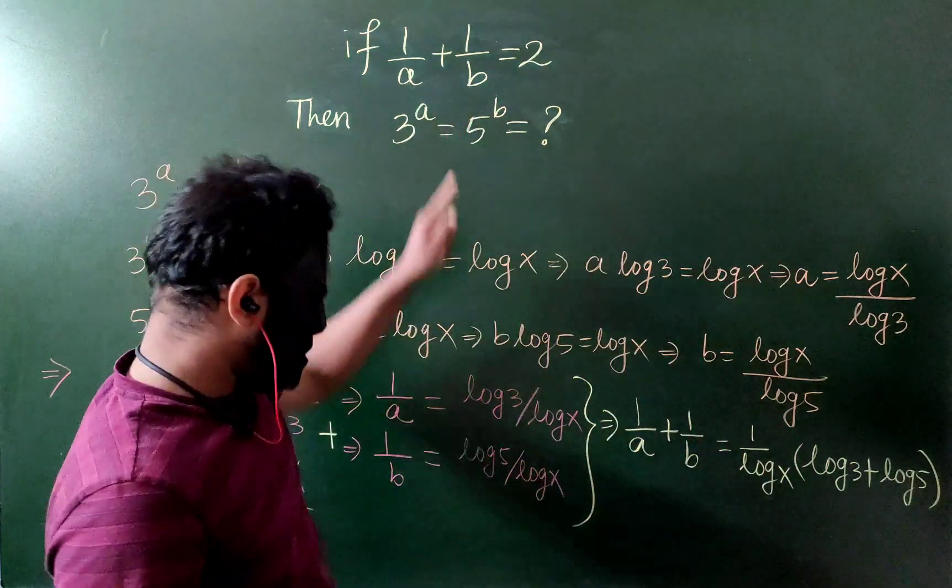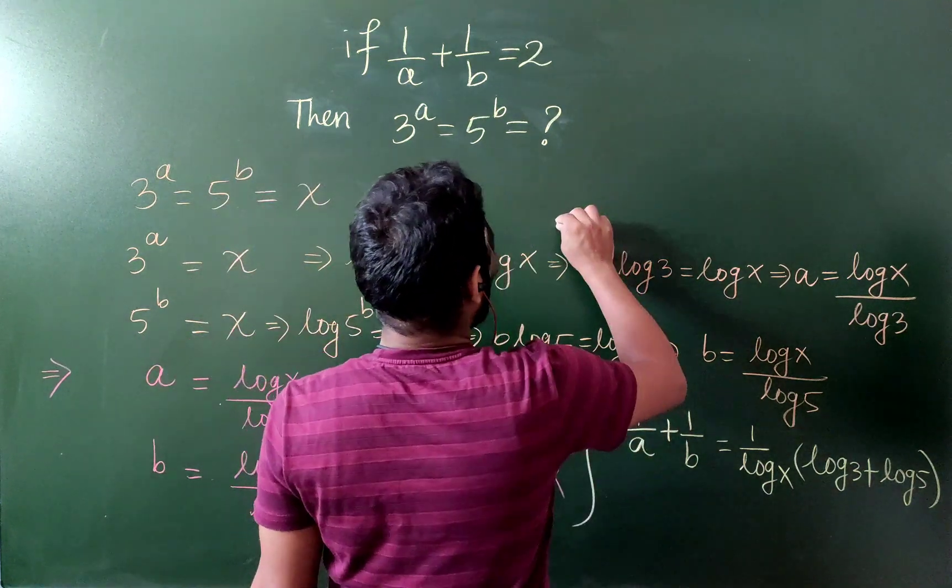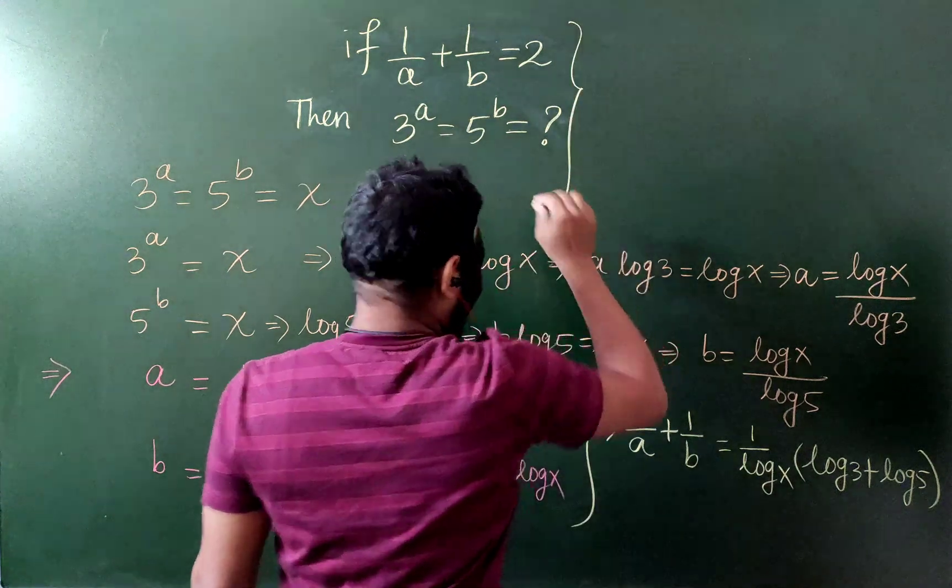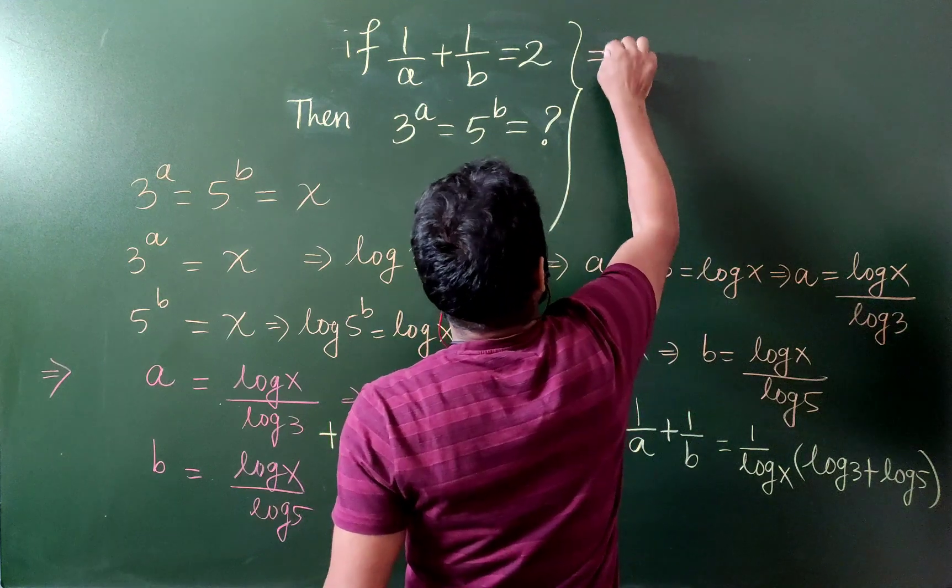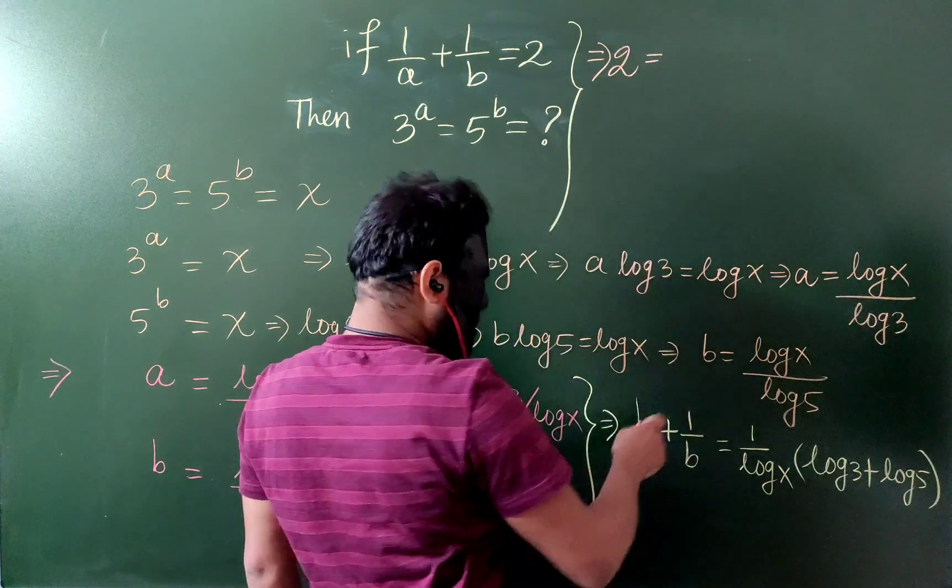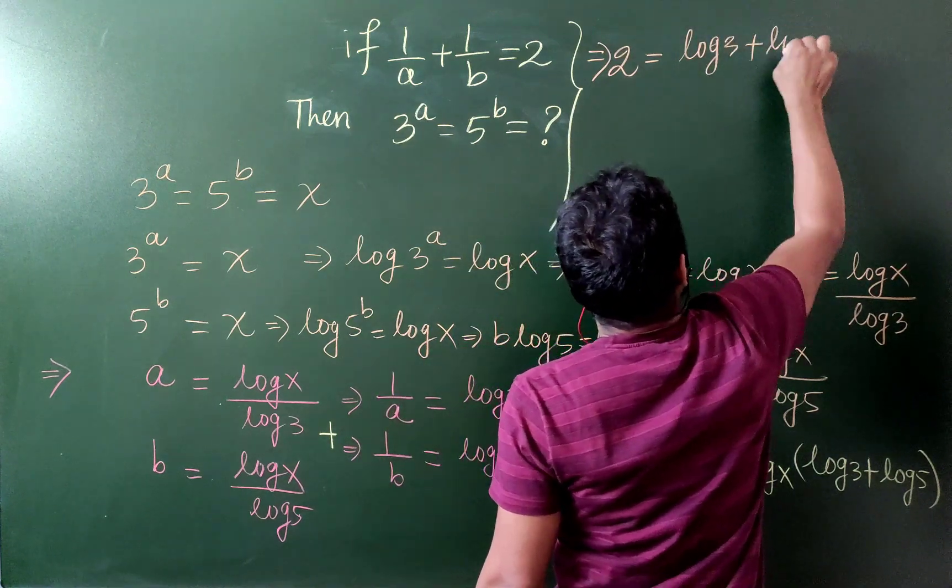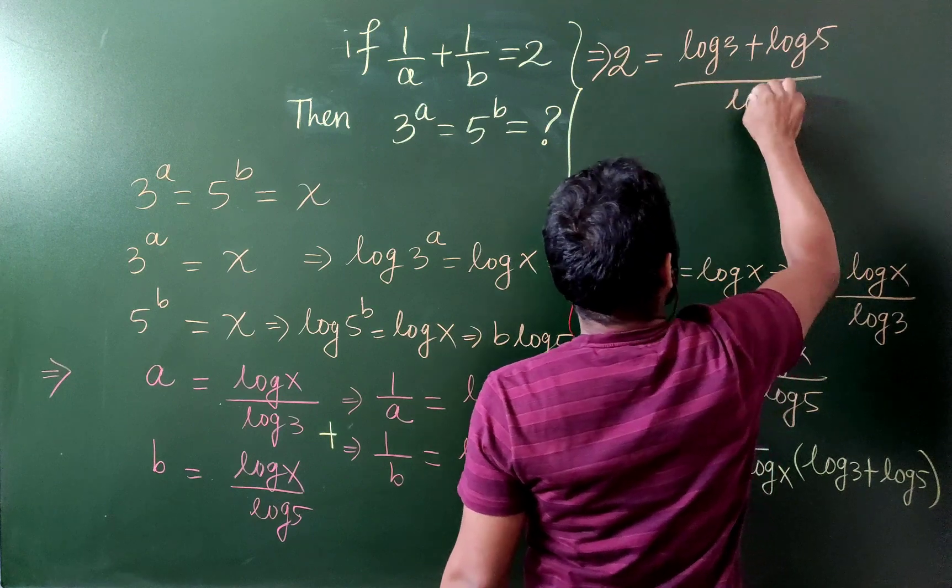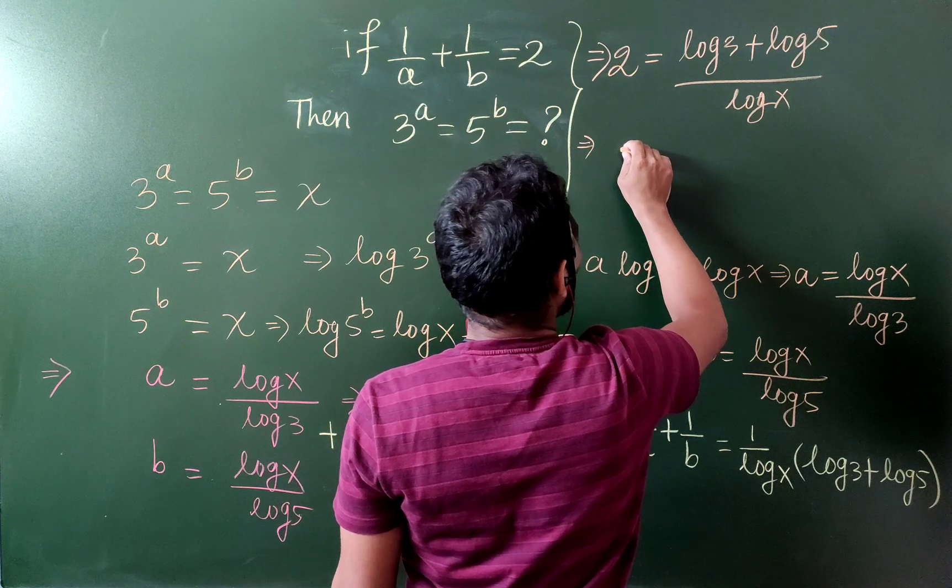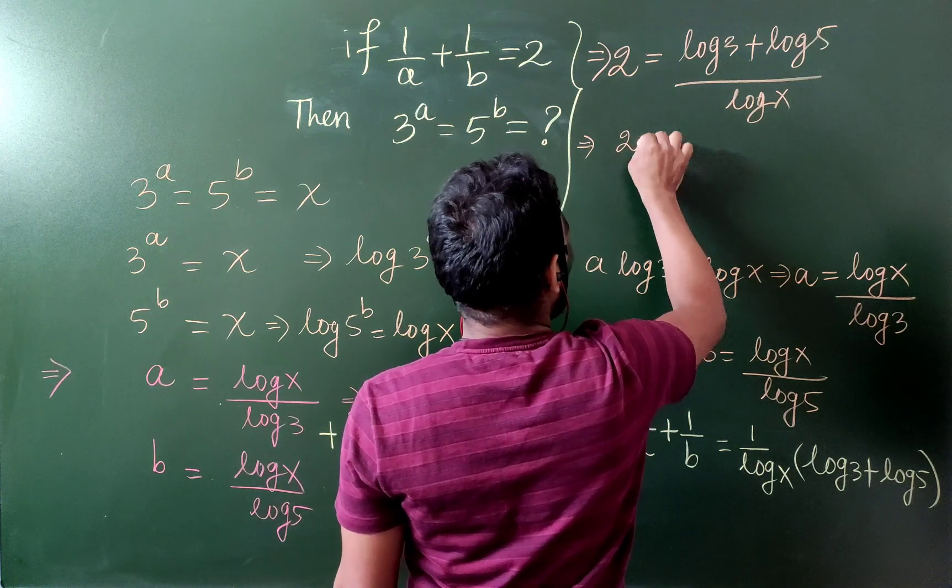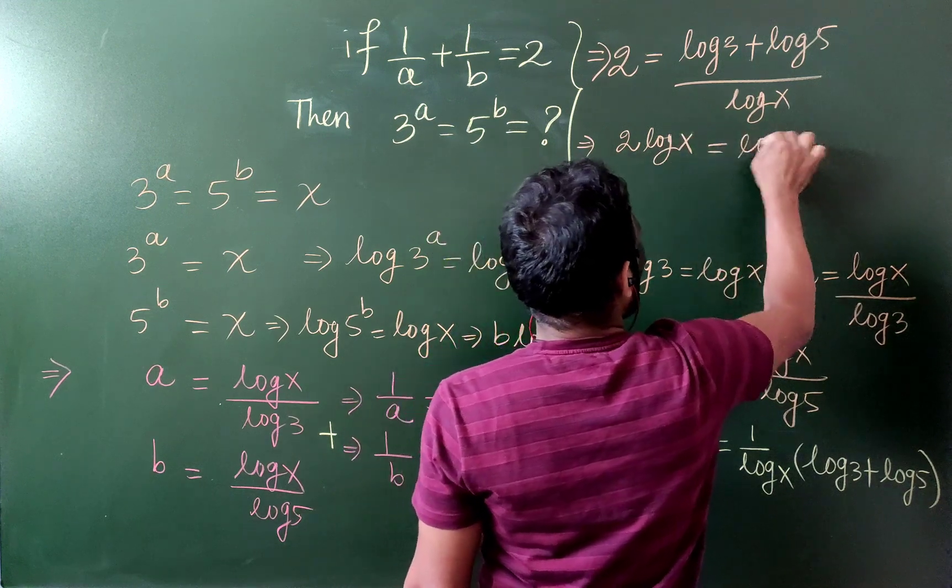And this is nothing but equals to 2. So it means 2 equals to log 3 plus log 5 by log x. Using the formulas of log, I can write that,